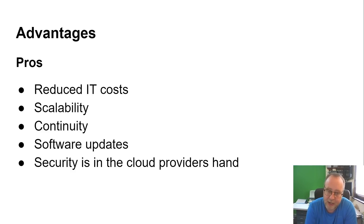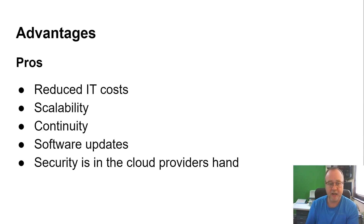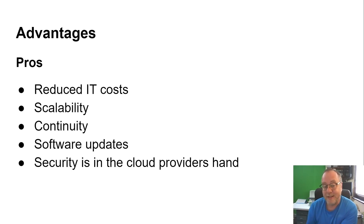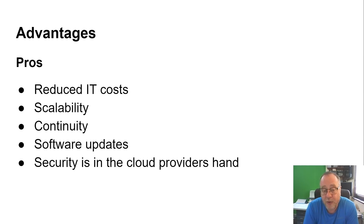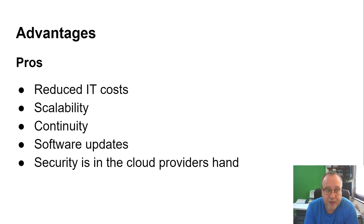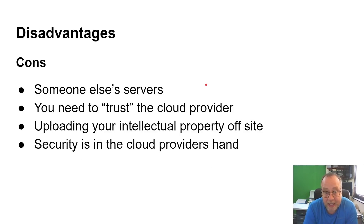The cloud is also scalable — you might buy your own server and then your business suddenly gets really popular and you need more. With the cloud, you can scale. You can also have your data in two places — one in America, one in Europe — so if there's a disaster like a tornado or hurricane, business can continue because the server is also elsewhere. As a business, you probably don't have server rooms in both America and Europe. And software updates, particularly security updates, are all handled by the service provider.